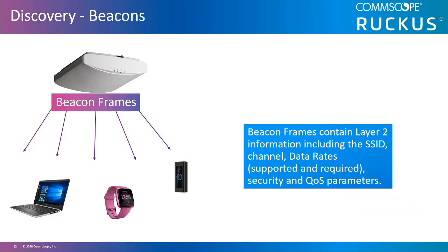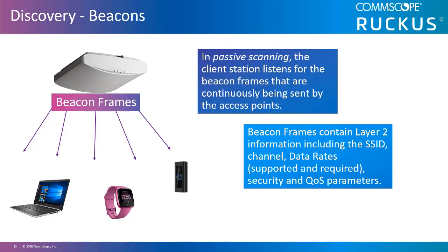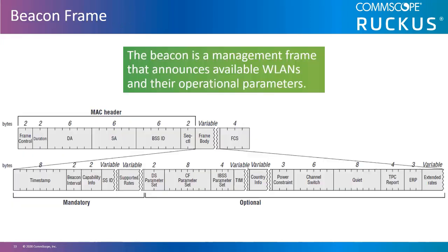Wireless client stations will passively scan and listen to beacon frames being transmitted in their area. Clients will scan all channels and frequencies they support at both 2.4 and 5 GHz. If they hear beacon frames from more than one access point, they will need to determine which access point has a higher quality signal and commence communicating with that access point.